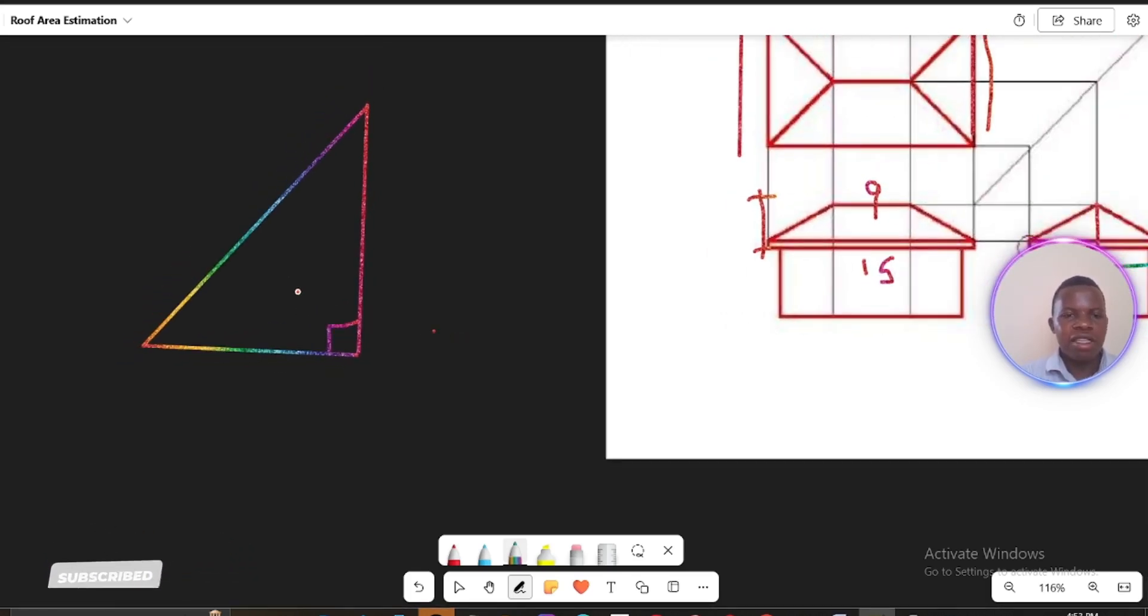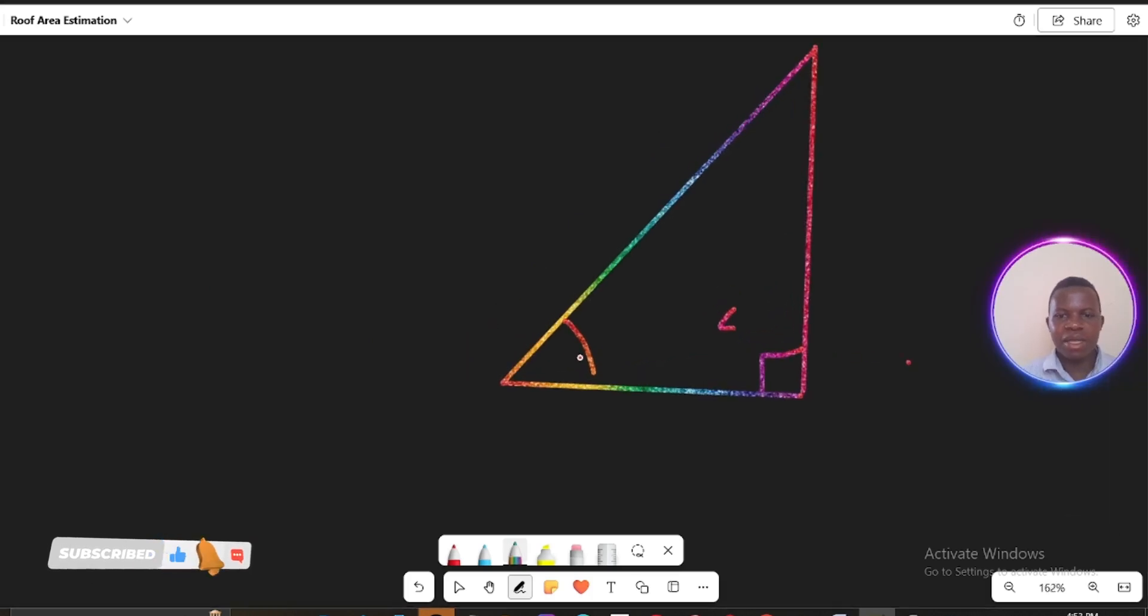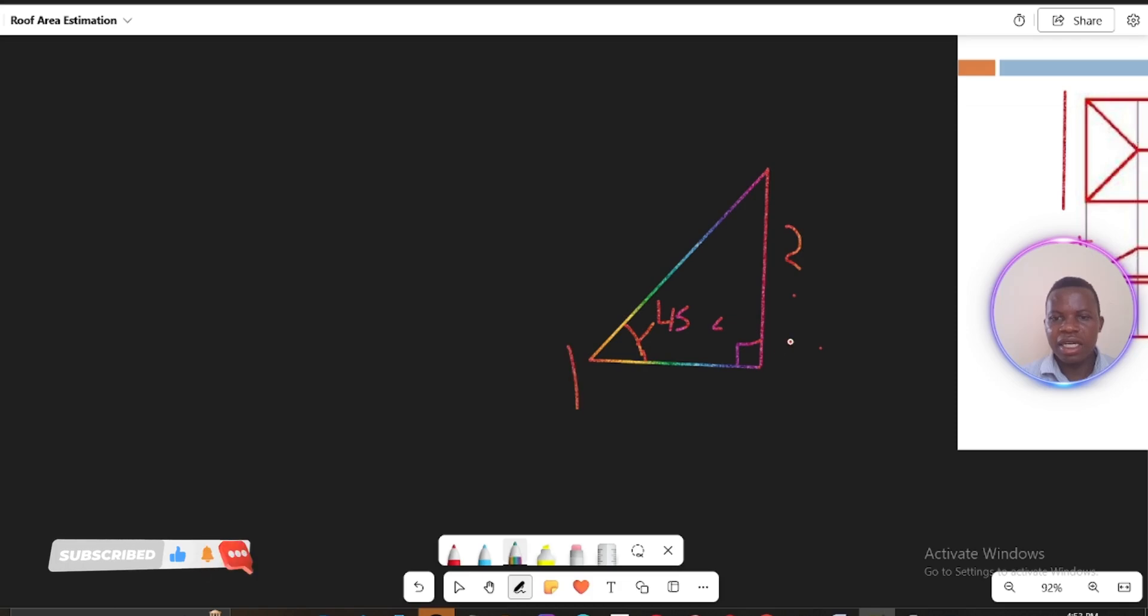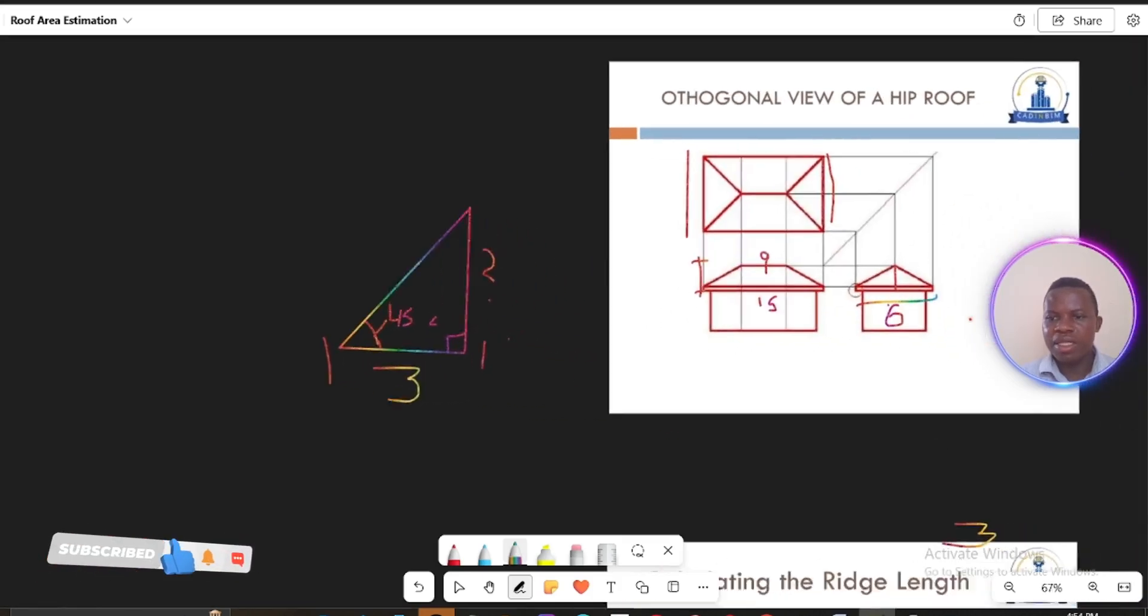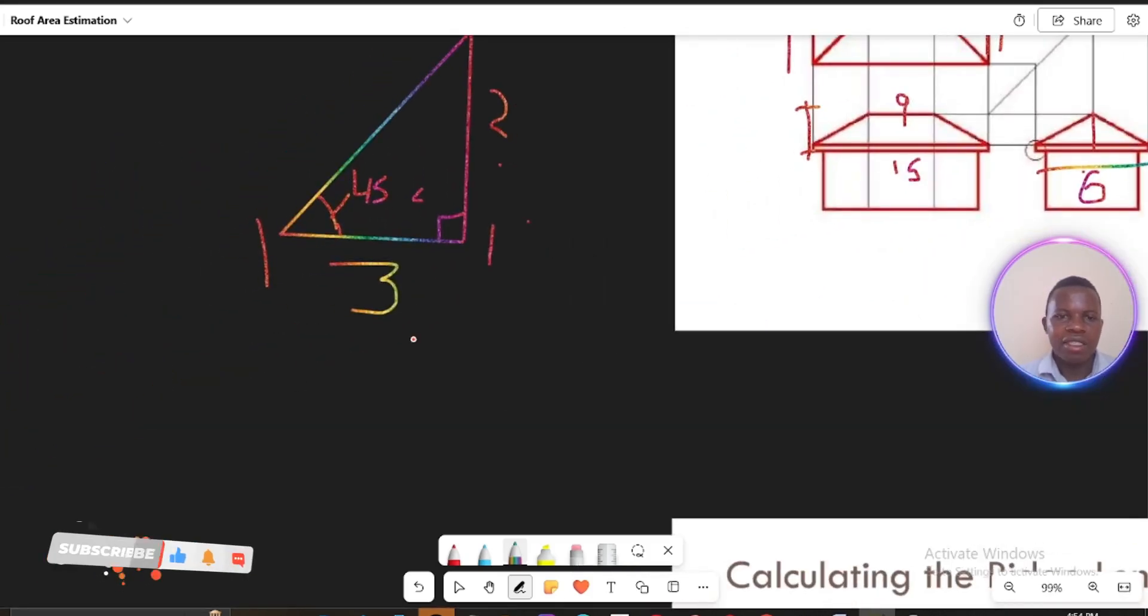You know that you are given this angle as 45, not this angle as 90 degrees, but this angle on this side here is 45. So we want to calculate this height here, but you have this length here as 3 meters. So remember, this is half this length here.